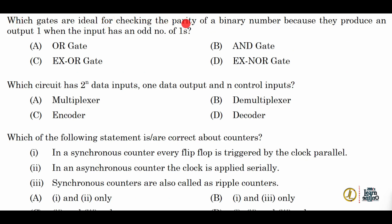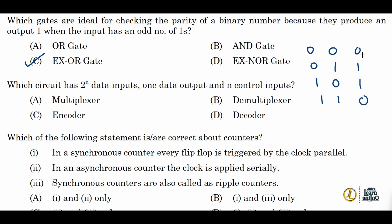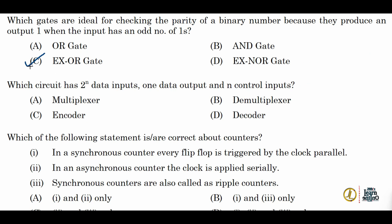Next: which gates are ideal for checking the parity of a binary number, because they produce an output of 1 when the input has an odd number of 1s? The correct answer is option C — the XOR gate. Looking at the XOR truth table: 0·0 = 0, 0·1 = 1, 1·0 = 1, and 1·1 = 0. When the input has an odd number of 1s, the output is high; in all other cases the output is low. So option C is correct.